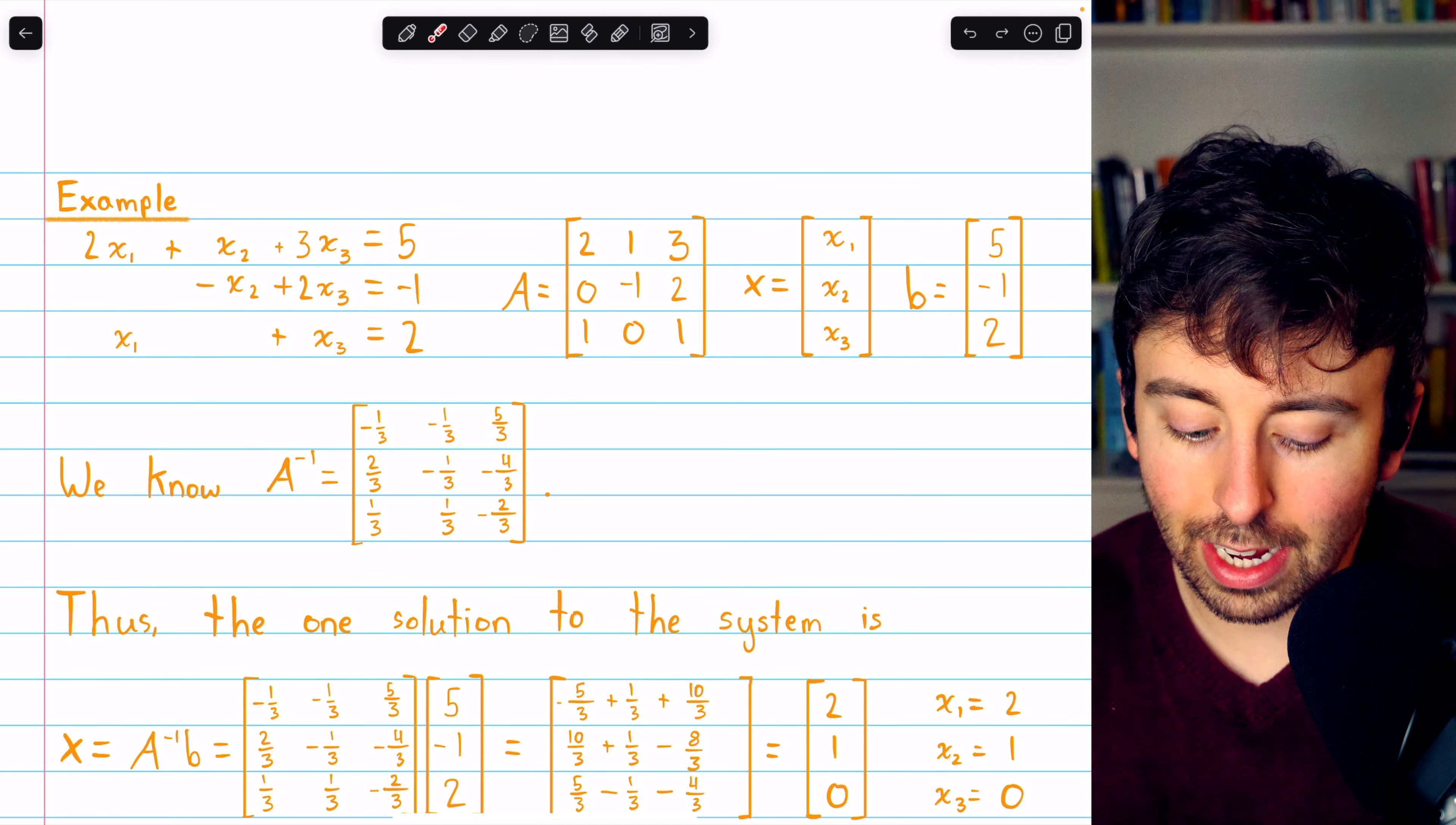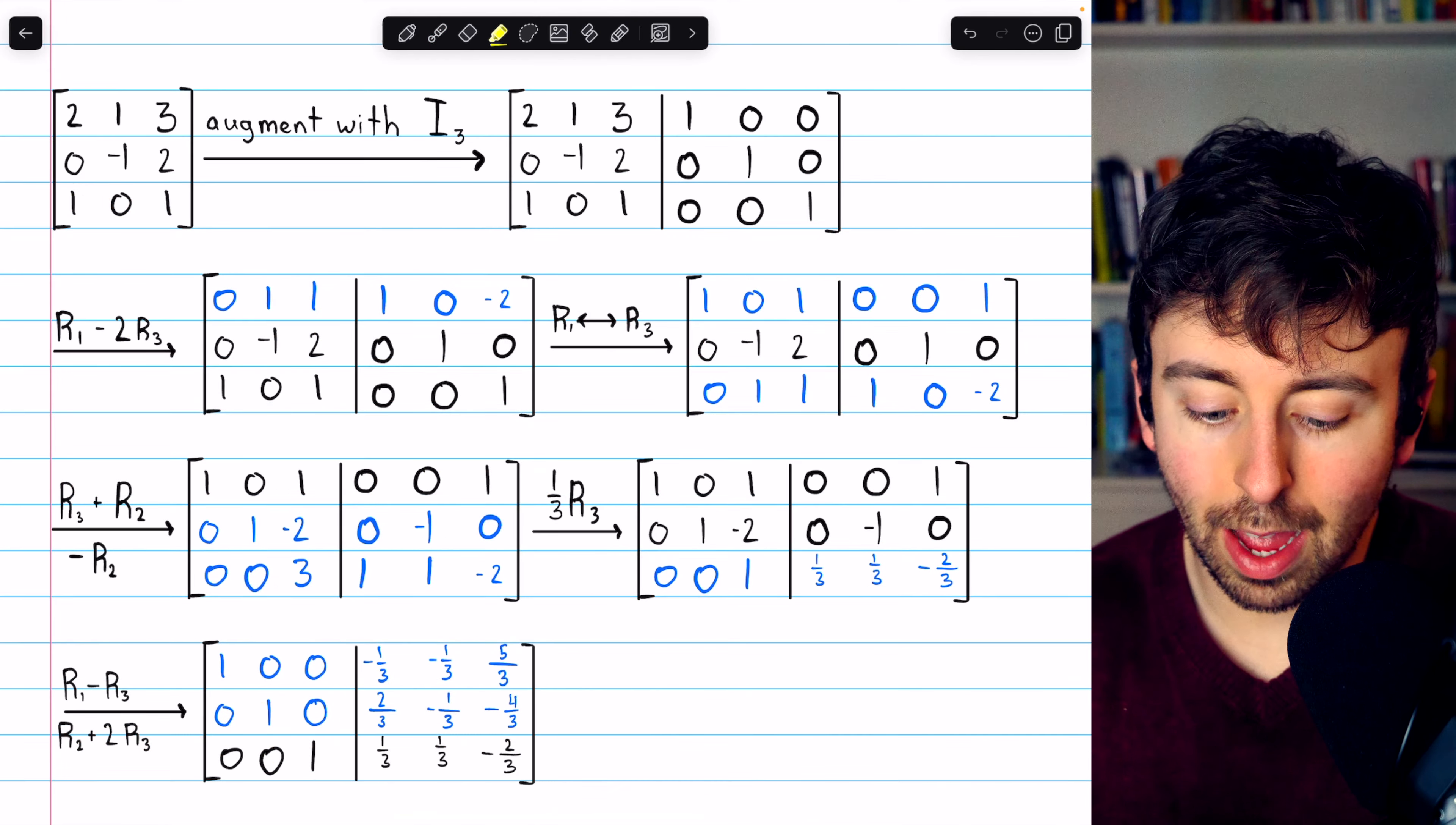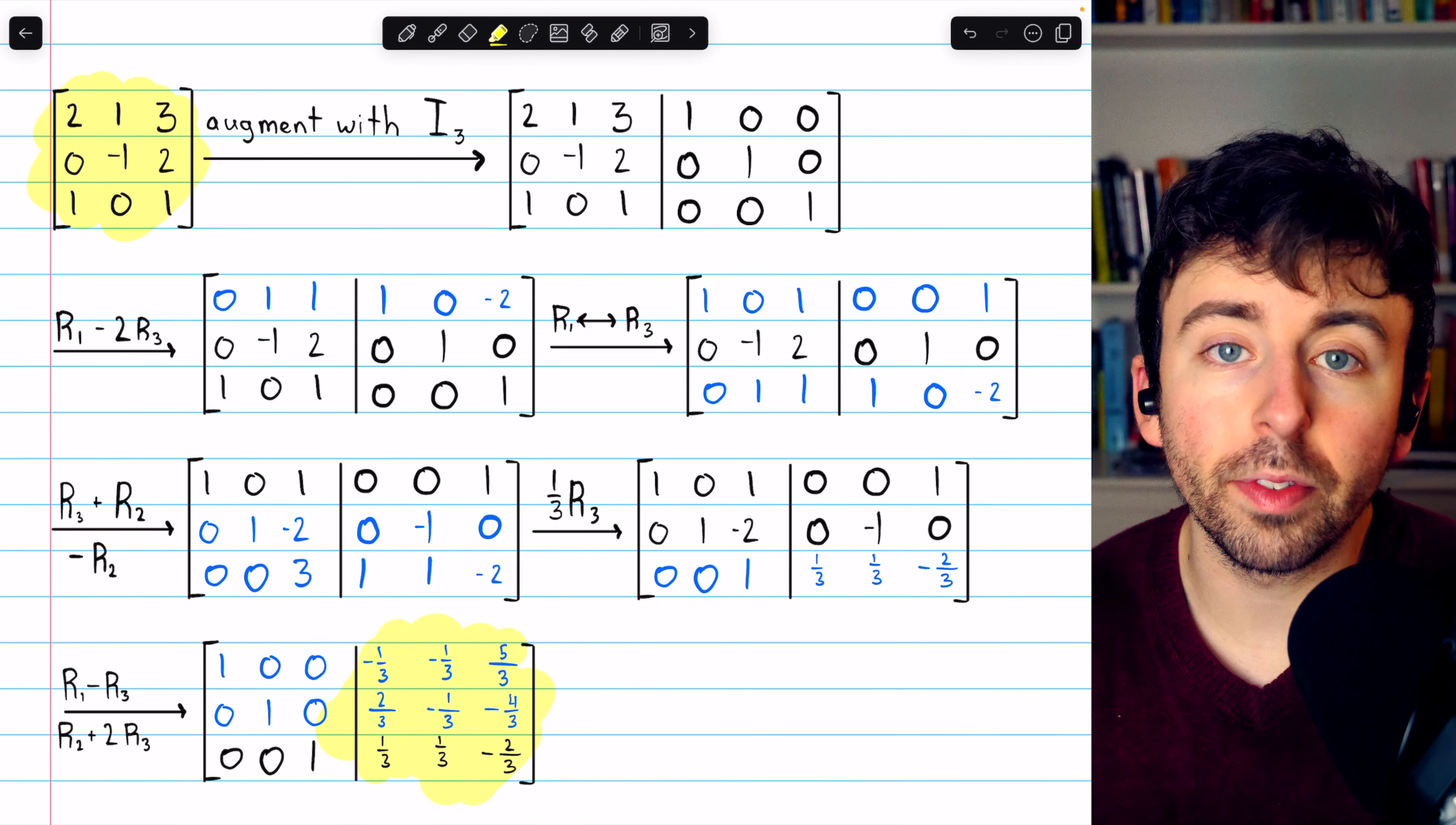A is indeed invertible, and this is its inverse, which you could figure out in our usual way. Here's a quick look at that process of finding the inverse of this matrix, and here that inverse is, which we will use to solve the system.